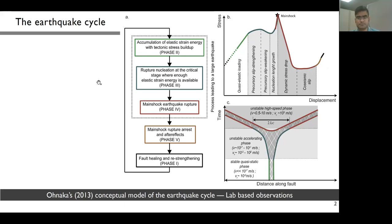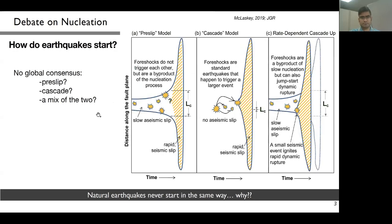Not everything is as simple as the cycle, but it's a good conceptual model. From this cycle I will mainly define two phases: the nucleation phase shown in blue, which occurs at slow slip velocities, and the propagation phase shown in red, which occurs at very fast ones.